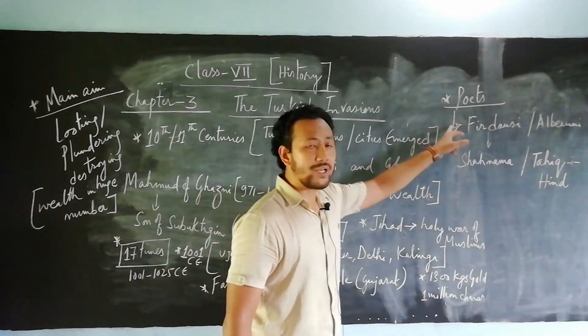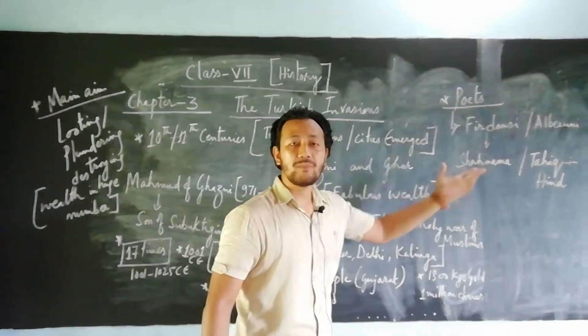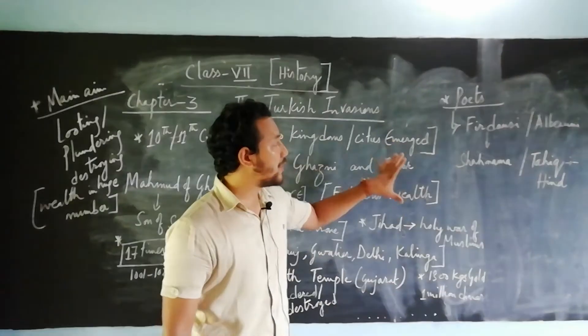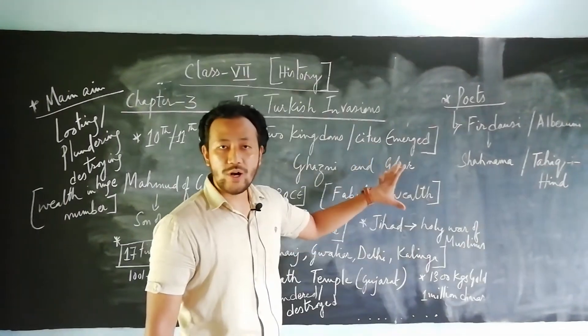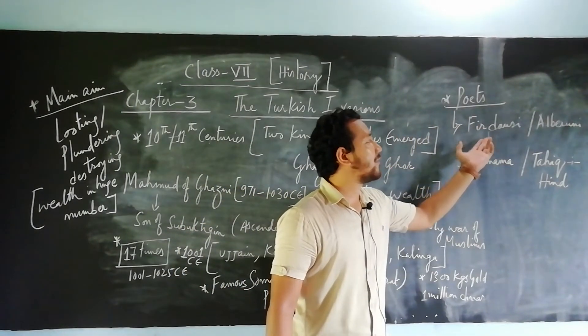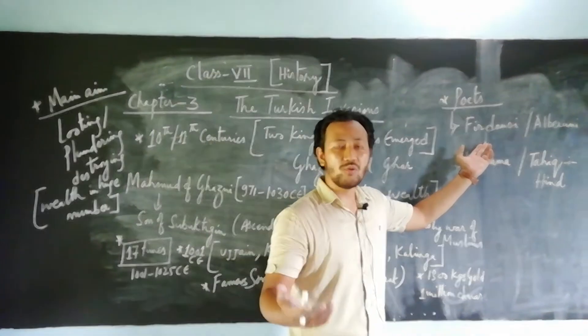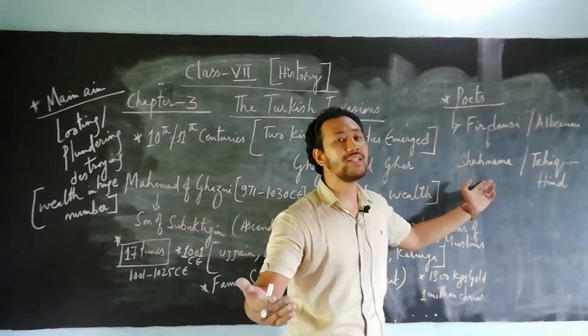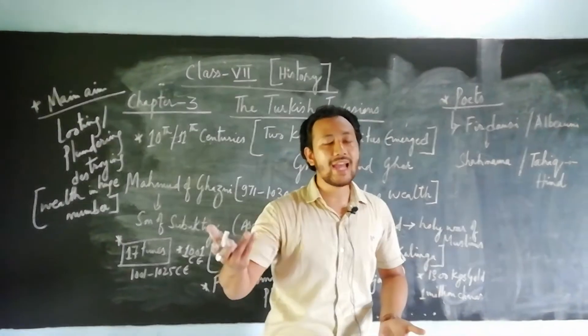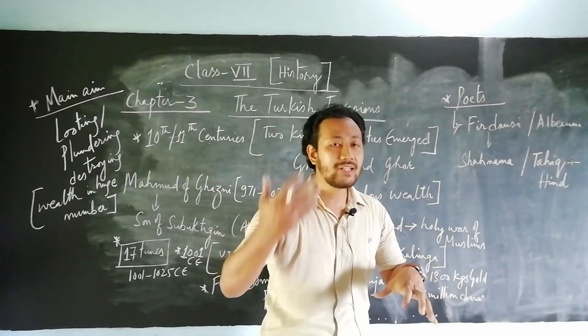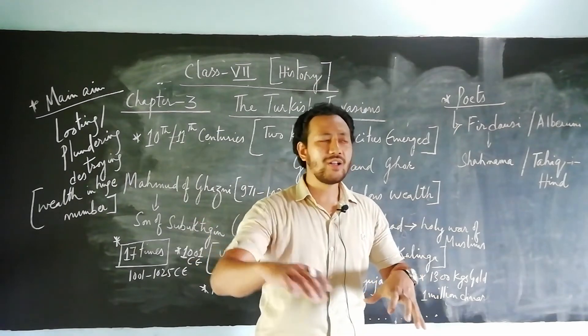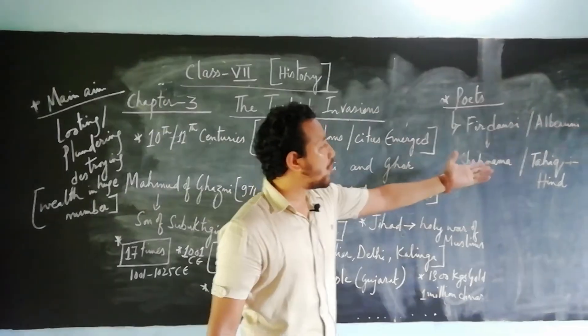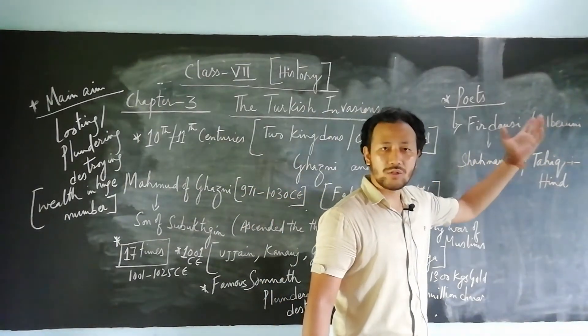Next we talk about the poets. Poets and authors played a very important role writing dramas, plays, poems, and prose. There were two authors: Firdausi, who wrote one of the famous books known as Shahnama, emphasizing all the scenarios of how Mohammed of Ghazni used his strategies when he invaded India 17 times, destroying and plundering.